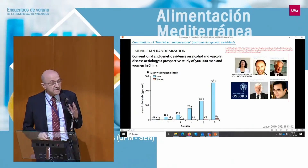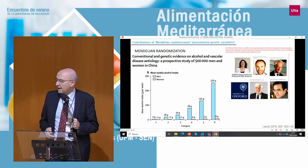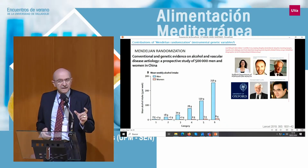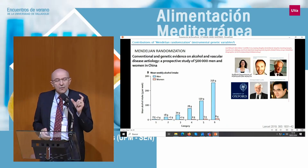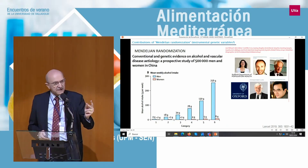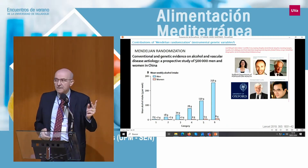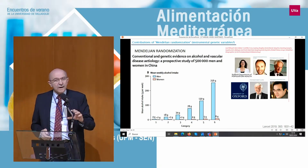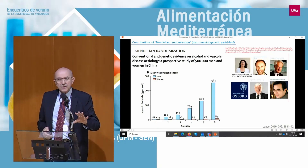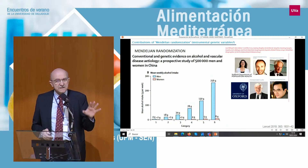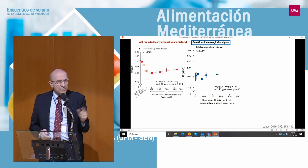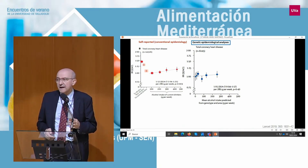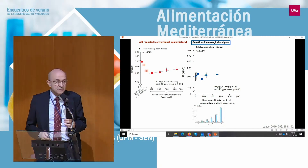The most important Mendelian randomization study is this one conducted from the University of Oxford, in the Kadoorie Biobank in China. They built six groups — working only in males, not in females — according to two variables: SNPs (genetic information) and combinations of several genetic polymorphisms, and then geographic area. They built six categories for classifying alcohol intake, not according to self-reported intake, but according to genes and geographical area. According to conventional self-reported data there was a U-shape association, but this was not present when they looked at classification according to geographical area and genes.